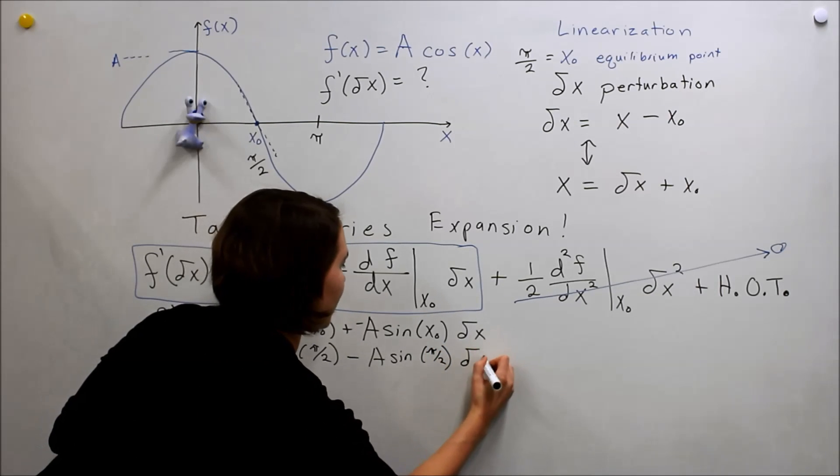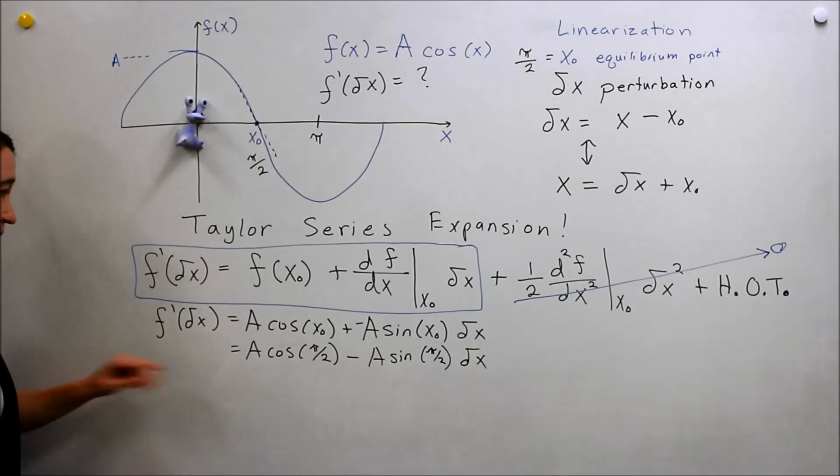So π over 2. Sorry. Now we're back. δx. Alright. And then...